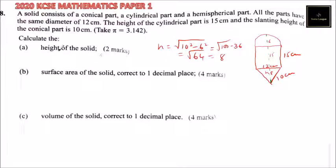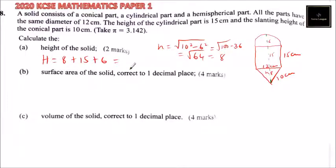Therefore, the total height of the solid is 8 (cone height) plus 15 (cylinder height) plus 6 (radius of hemisphere). That gives us 23 plus 6, which equals 29 cm. So 29 cm is the height of the solid.